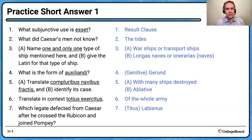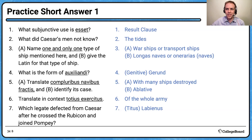Finally, a history question: which legate defected from Caesar after he crossed the Rubicon and joined Pompey? This is Caesar's trusted right-hand man in Gaul — Titus Labienus. This is something you might have picked up when preparing background material on Caesar's life after the Gallic War, as he becomes dictator for life and is eventually assassinated in 44 BC on the Ides of March.